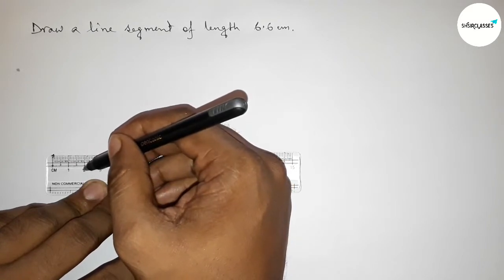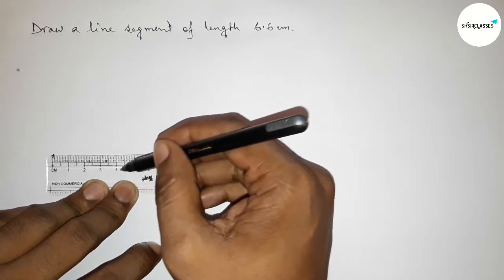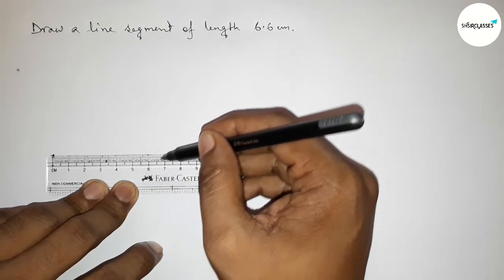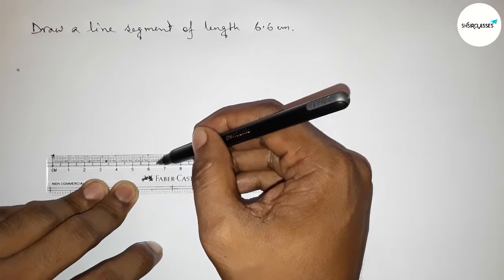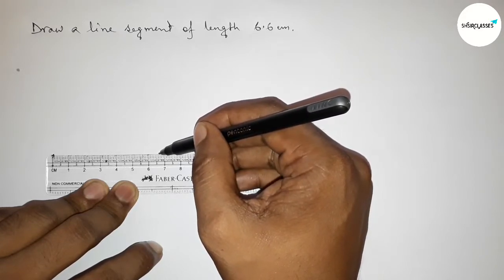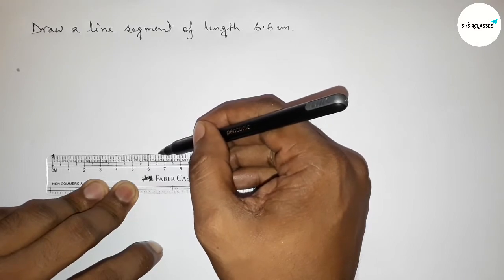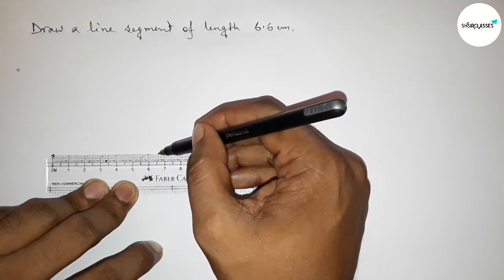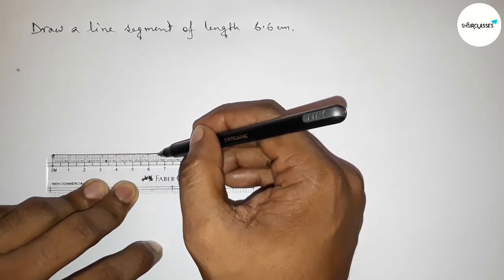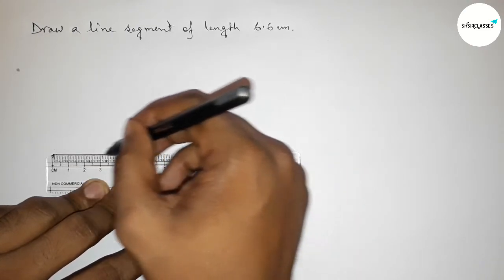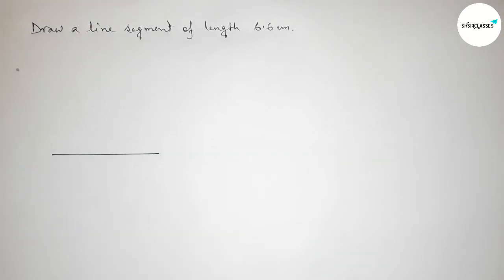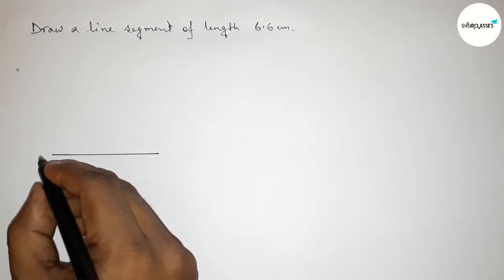2 centimeters, 3 centimeters, 4 centimeters, 5 centimeters, 6 centimeters, and this is 6.5, and this is 6.6. So this is 6.6 centimeters. First marking 6.6 centimeter length and joining the line by this way. Now taking here point A and here B.